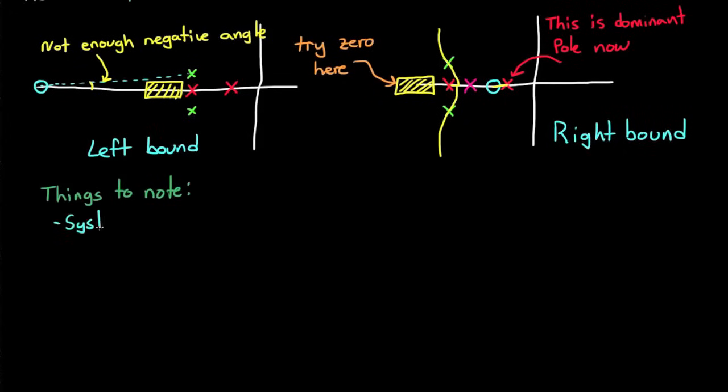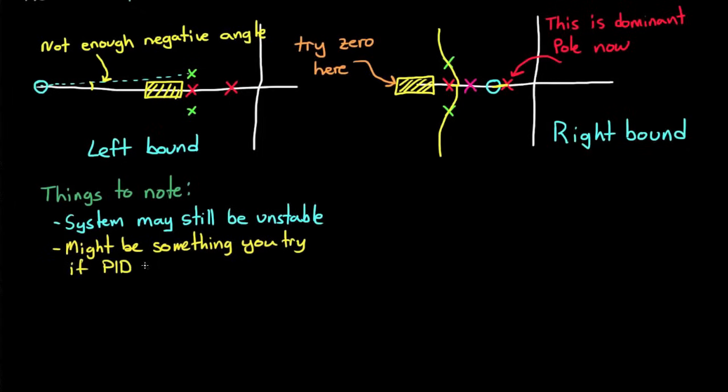Okay, just a few more things to note. When you design a lead compensator this way, it doesn't ensure that the system is going to be stable, only that your desired pole locations do in fact exist on the root locus. It is possible that with higher order systems, another pole has wandered over to the right half plane and made the system go unstable. Also, this might be something that you want to try if you can't get a PID controller to work. I tend to think PID is a little bit more intuitive, and so I usually start there and then go to a lead lag compensator afterwards.